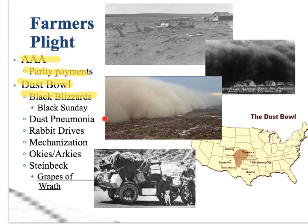This is a picture of a modern dust storm that hit Phoenix a couple of years ago. You can see that wall of dirt being picked up from the desert and just burying Phoenix. Black blizzards were significant problems.